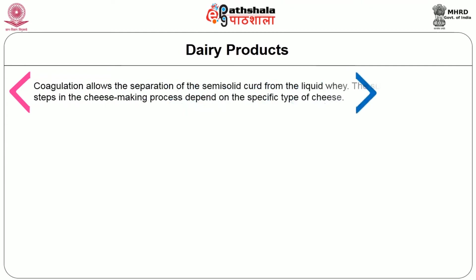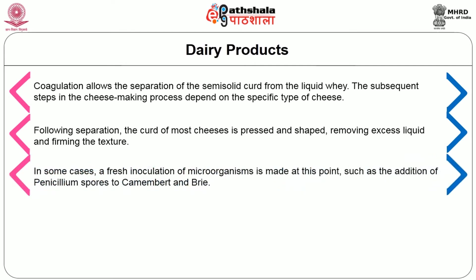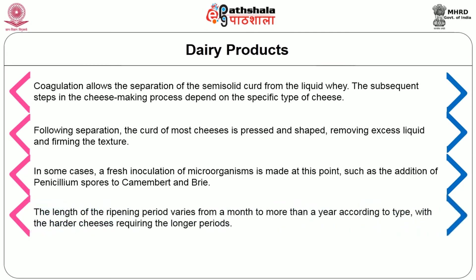Coagulation allows the separation of the semi-solid curd from the liquid whey. The subsequent steps in the cheese making process depend on the specific type of cheese. Following separation, the curd of most cheeses is pressed and shaped, removing excess liquid and forming the texture. During the ripening process, salt is often added and flavor develops due to continuing microbial action on the protein and fat components of the cheese. In some cases, a fresh inoculation of microorganisms is made at this point, such as the addition of Penicillium spores to Camembert and Brie. The length of the ripening period varies from a month to more than a year according to type, with harder cheeses requiring the longer periods.